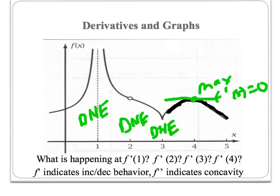If we're looking at the second derivative, first let's look at the first derivative. We would know that the first derivative would be positive here because the function is increasing, negative in this region because it's decreasing, then positive, and then negative again — based on increasing and decreasing behavior.